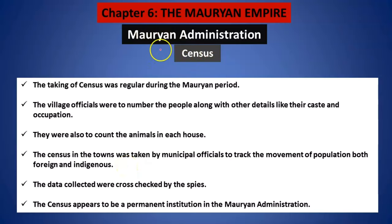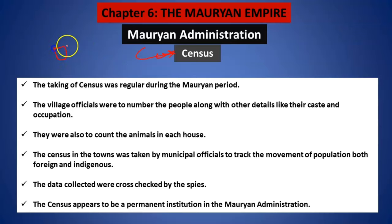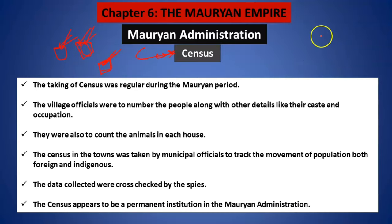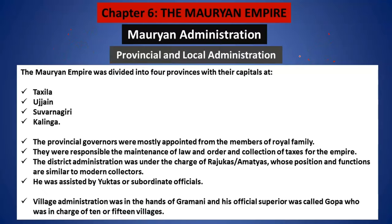In the Mauryan administration, census was also taking place — look at the beauty of the administration. Matlab, us samay par bhi logon ki, unke janwaron ki, unke dukaanon mein rakhe hue samaan ki ginti ki jaati thi. The people were counted, the animals were counted, the items kept in the shops were counted, so that the king should have an estimate of what is going on in his administration at the grassroot level.